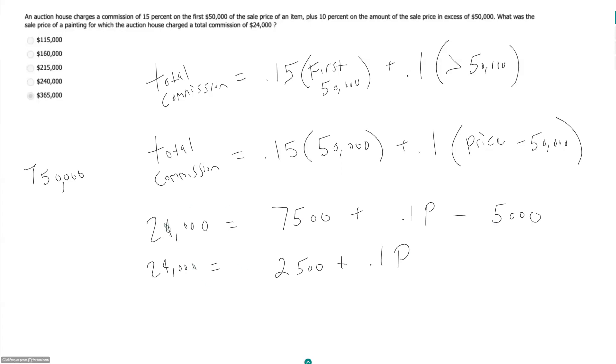24,000 minus 2,500 is what? 24,000 minus 2,000 is 22,000, so 21,500. 21,500 is equal to 0.1 times p.